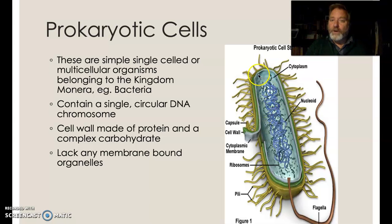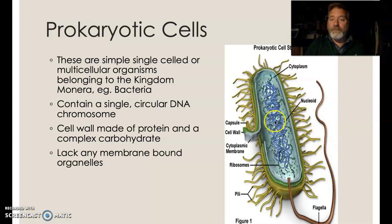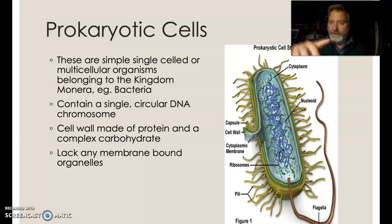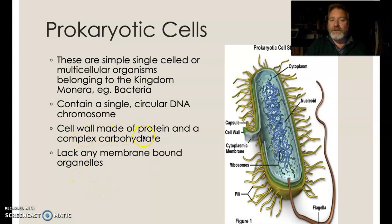This is the prokaryotic cell. I know it's prokaryotic because although it's got a cell membrane and cell wall on the outside — which could suggest a plant — and a flagella, which is a tail for movement, inside there are no organelles, no organised compartments. Most importantly, the DNA is a free-floating loop. The cell wall is also made of protein and a complex carbohydrate, unlike plant cell walls which are just carbohydrate.